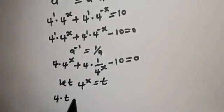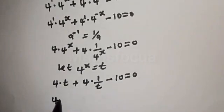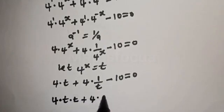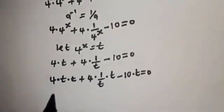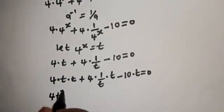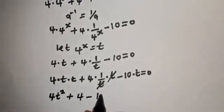So: 4 multiplied by t plus 4 multiplied by 1 over t, minus 10 is equal to 0. Now let's multiply all through by t: 4 multiplied by t multiplied by t, plus 4 multiplied by (1 over t) multiplied by t, minus 10 multiplied by t is equal to 0.